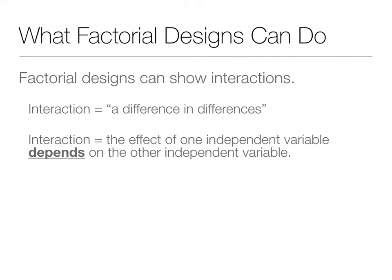An interaction is the effect of one independent variable that depends on the other independent variable. There's always going to be this kind of caveat statement in an interaction, because it's not just one independent variable acting alone — that's a main effect. It's not the other independent variable acting alone either — that's the main effect of the other independent variable. An interaction is when those two independent variables are interacting with each other.